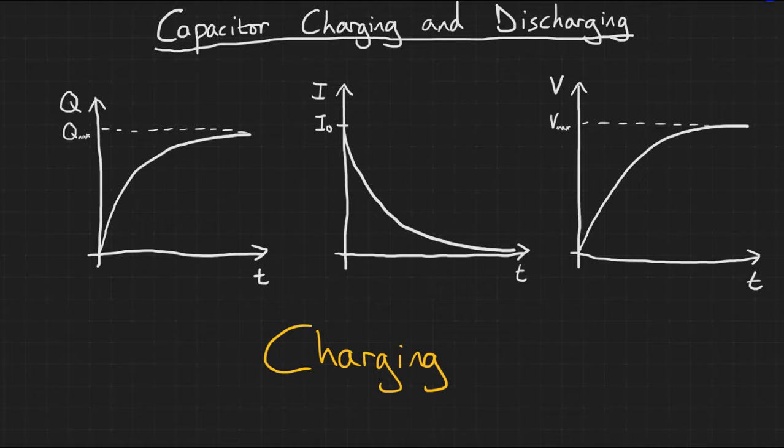This is also represented by the current decreasing over time. At the beginning, the current is at a maximum as it is easy for electrons to move onto the capacitor, but over time that gets more difficult and the current decays towards zero. The potential difference of the capacitor increases over time as the charges build up, but again reaches a maximum once no more charge will fit on the capacitor.